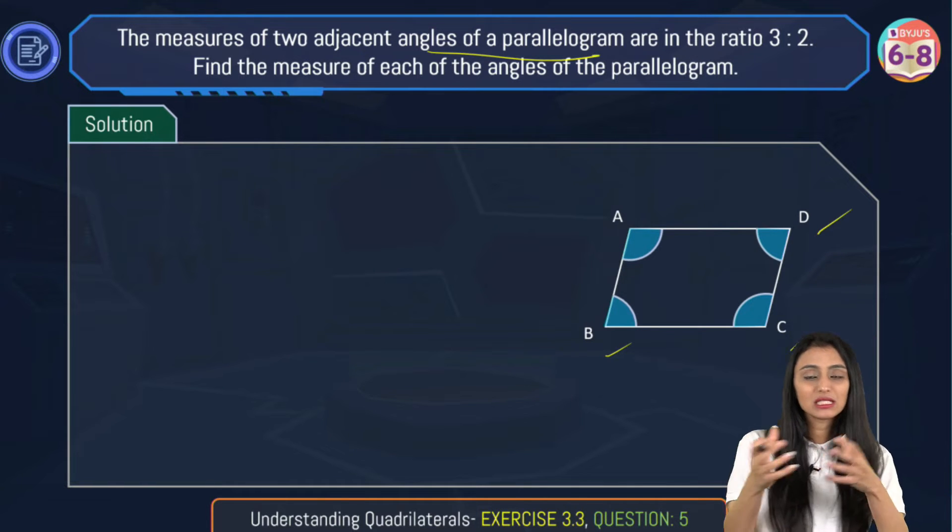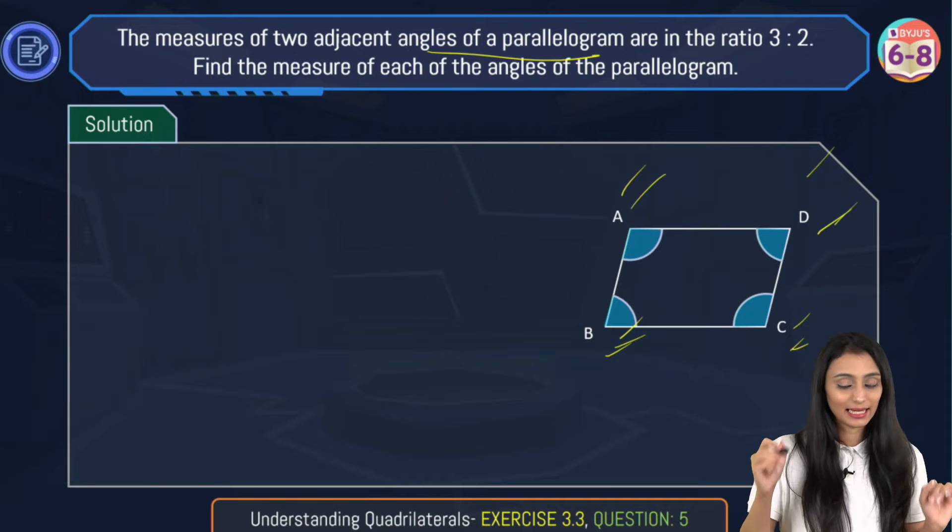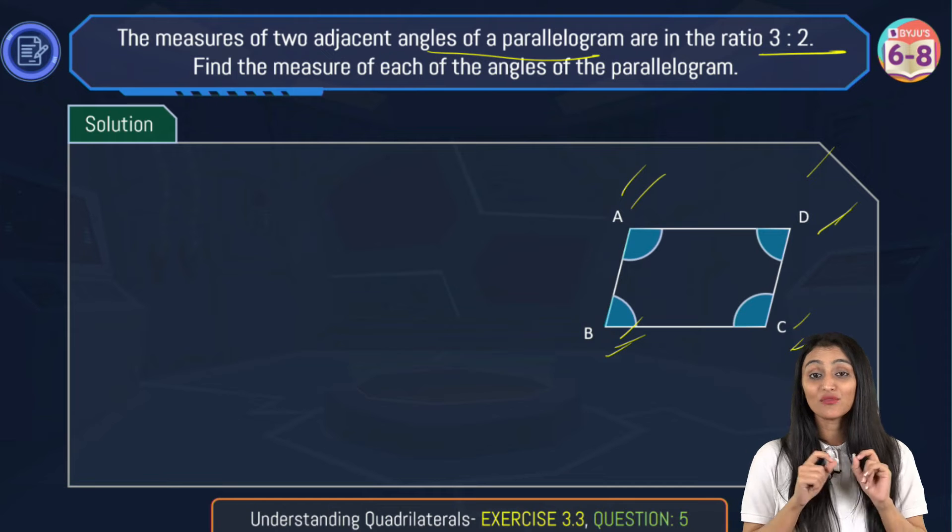Measure of two adjacent angles - adjacent means the neighboring ones. It could be AB, it could be angle B and C, it could be angle C and D or angle D and A. Any pair are in the ratio 3 is to 2. We have to find out the measure of each of the angles.